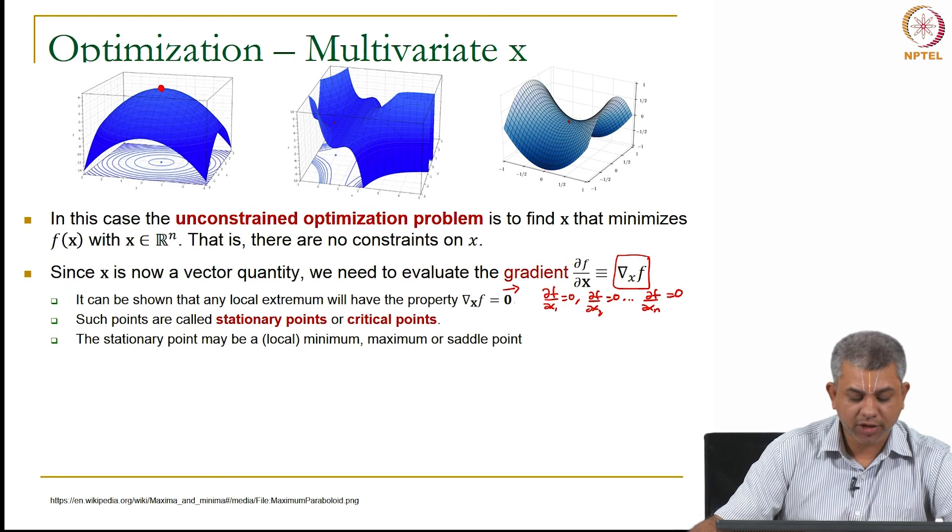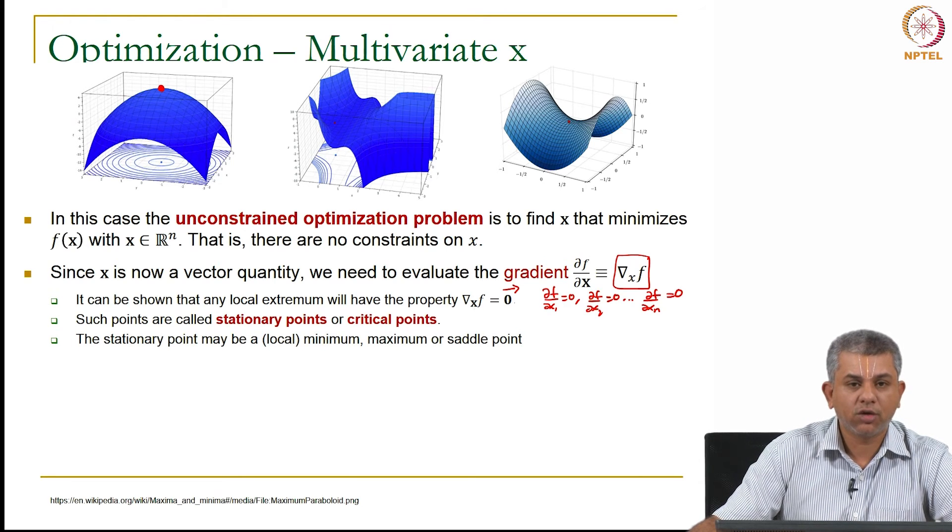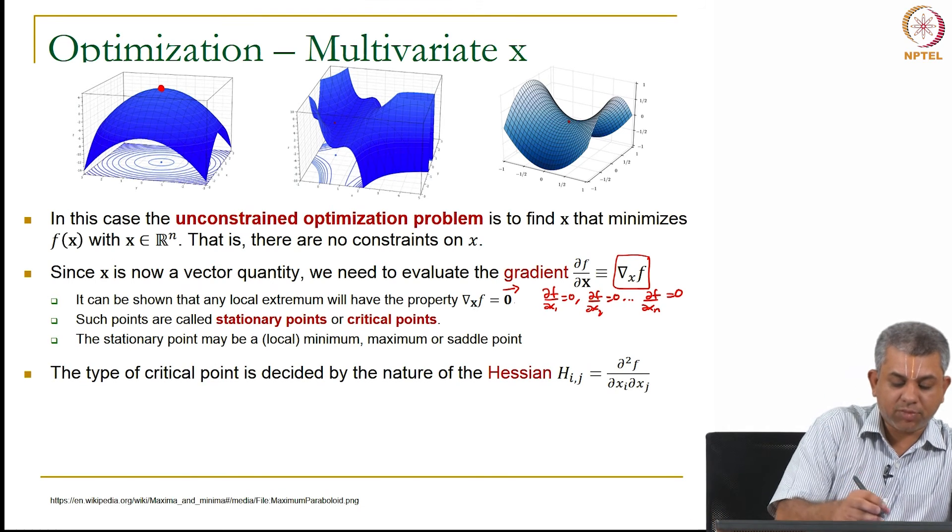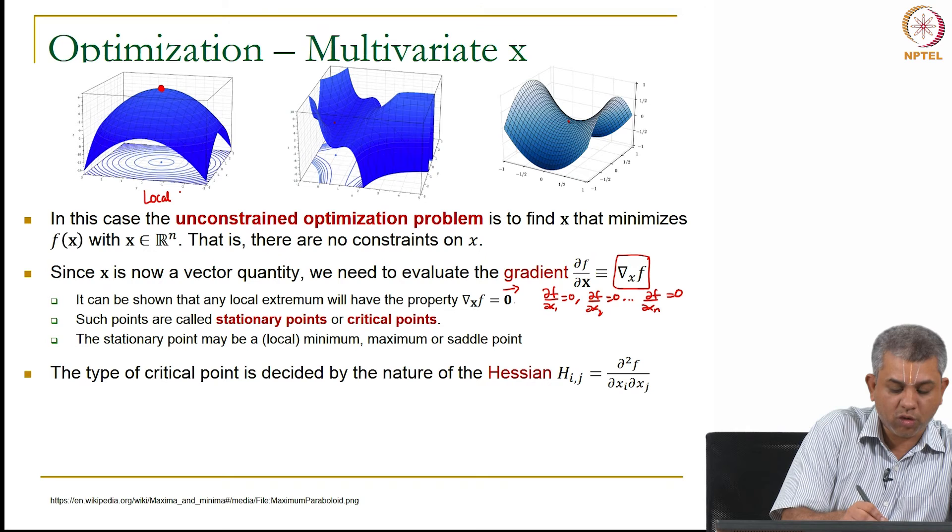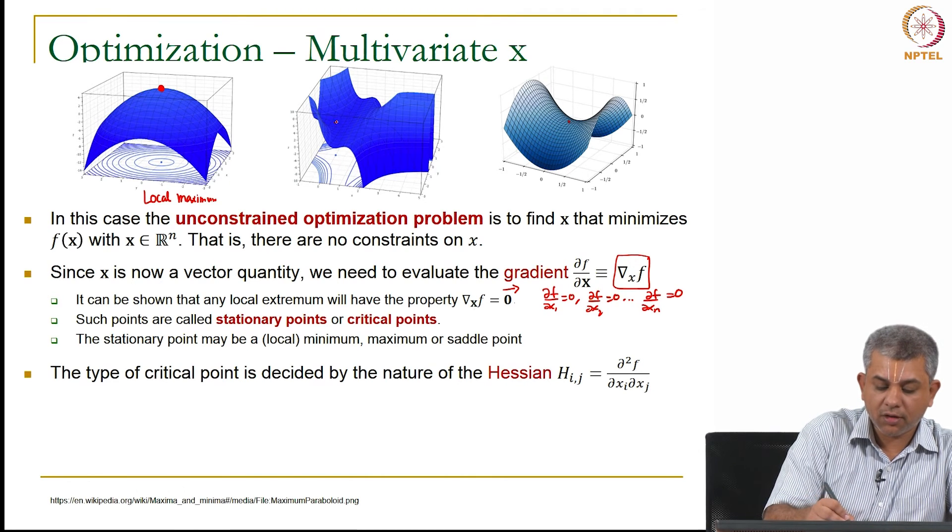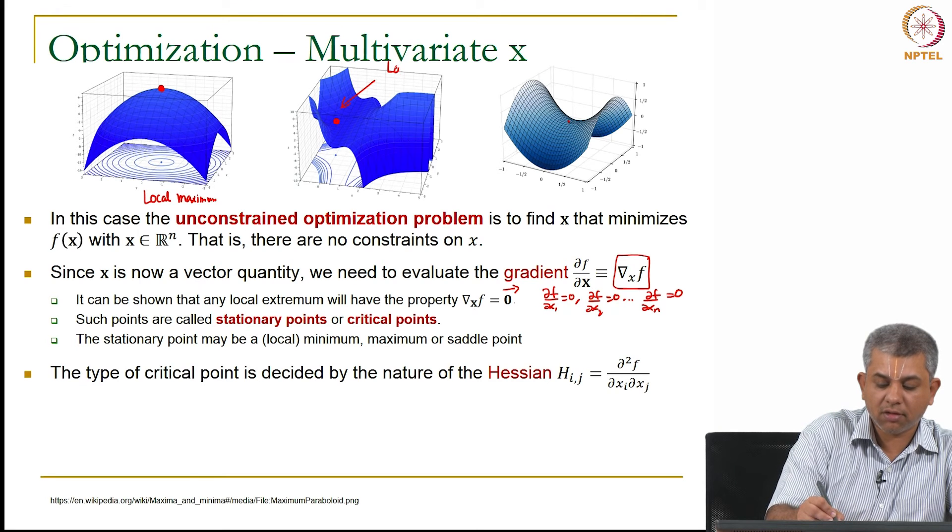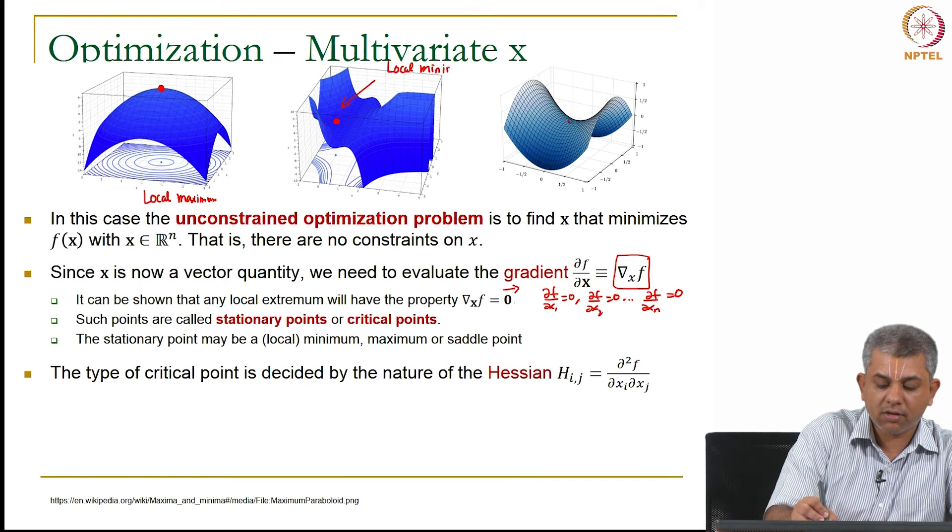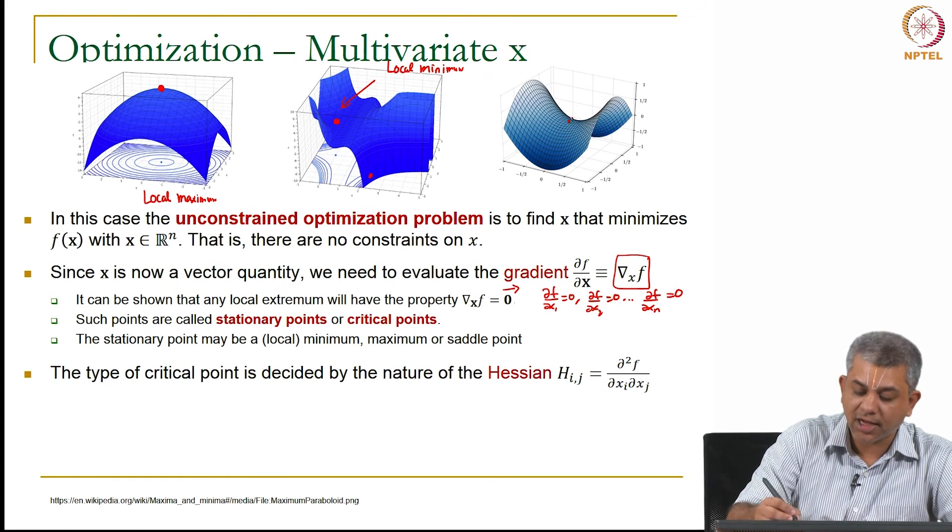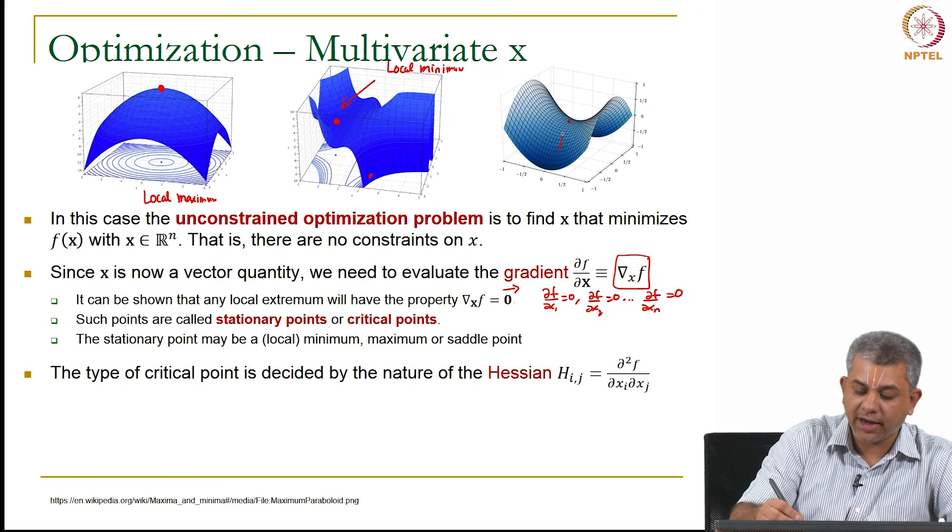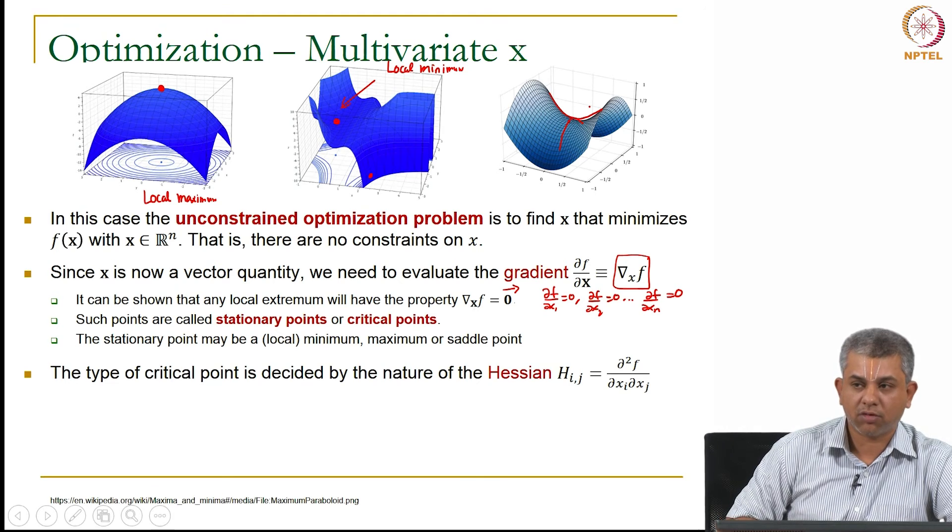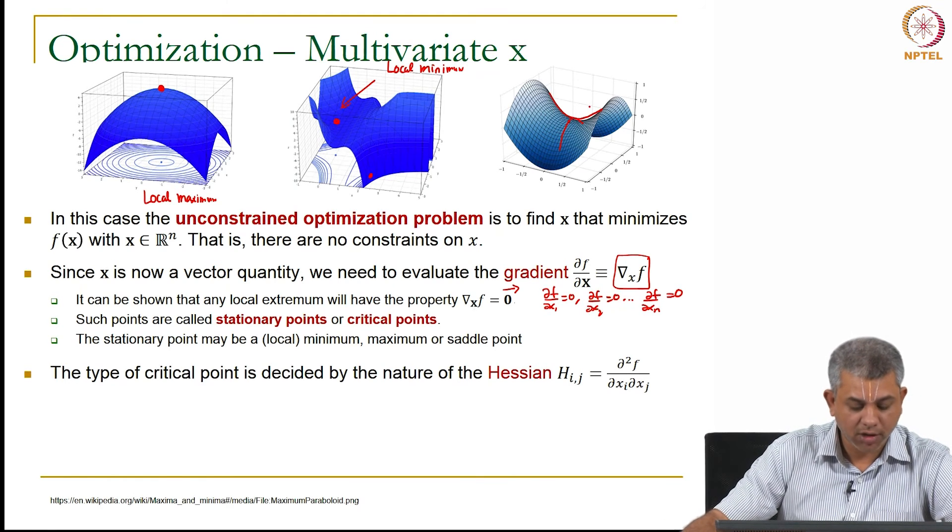Once again these are called stationary points or critical points and like in the one dimensional case you could have a local minimum, local maximum or a saddle point. So some examples are given here, this is a local as well as a global maximum. Here for example is a local minimum which is not a global minimum because there are values lower than this, and this is the example of a classic saddle point. In one direction it is a local maximum and in another direction it is a local minimum, so that is what a typical saddle point looks like.